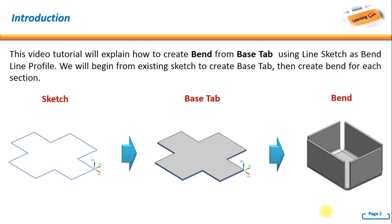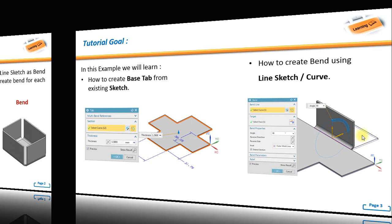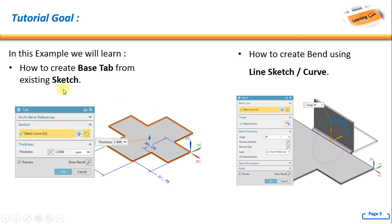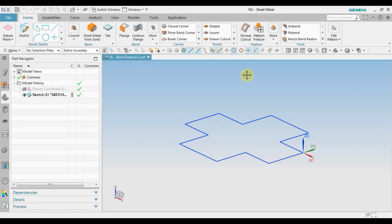Welcome back to the NX tutorial. In this video we will explain how to create a bend from a base tab using a line sketch as a bend line profile. We will begin from an existing sketch to create a base tab, and then create a bend for each section. The tutorial goal is to learn how to create a base tab from an existing sketch, how to create a bend using a line sketch or curve, how to create a tab, and how to create a bend.